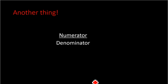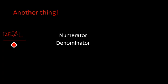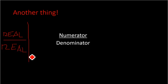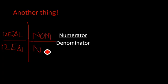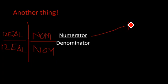Another important point about ratios: if your numerator and denominator are both real accounts, you do not need to compute for the average. Likewise, if both your numerator and denominator are nominal accounts, you also don't have to compute for the average. We only compute for the average when your numerator is a nominal account and your denominator is a real account.